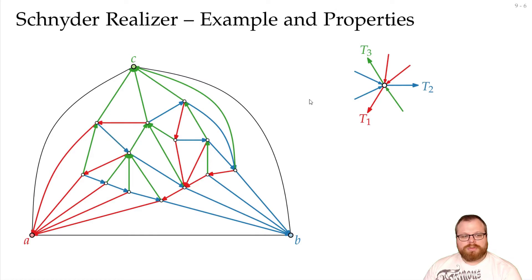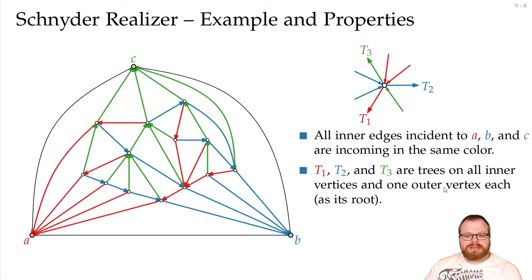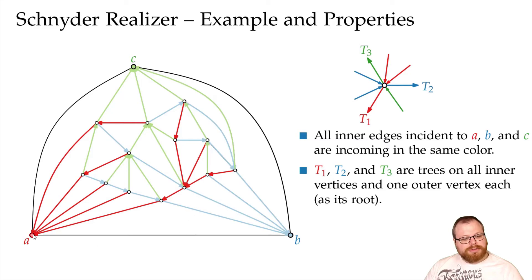But there are two important properties. The first one, if we look at all the inner edges incident to A, B, and C, then they are all incoming of the same color. So A only has red incoming edges, B only has blue incoming edges, and C only has green incoming edges. Also, these three colors give us three trees that cover all the inner vertices and one outer vertex each. This is easy to see, because at every vertex we must have some outgoing edge for every color, and this always points to the parent.